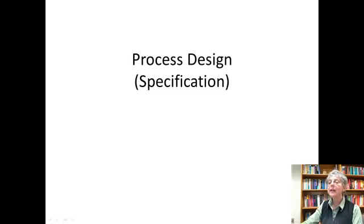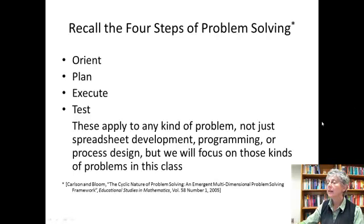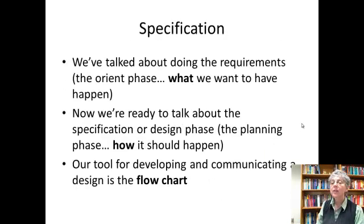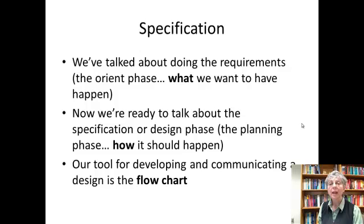We're going to talk now about the next phase of process design, which is specification. Recall the four steps of problem solving: we start with orient, next is plan, execute, and test. These apply to any kind of problem, not just programming. Last time we talked about requirements — that's the orient phase, basically about what we want to have happen. Now we're ready to talk about specification, which is how it should happen.